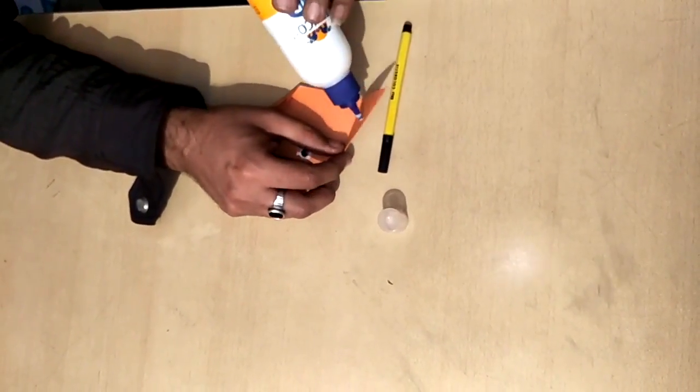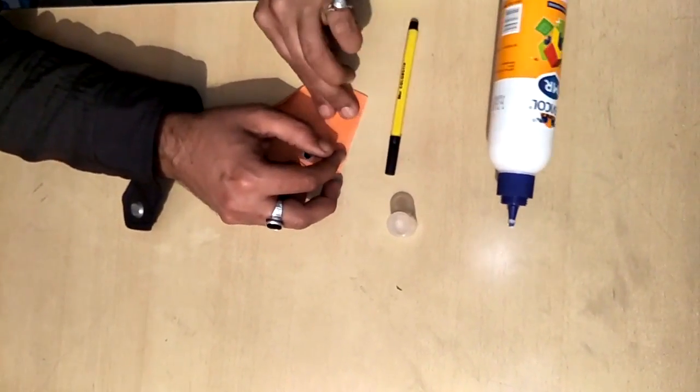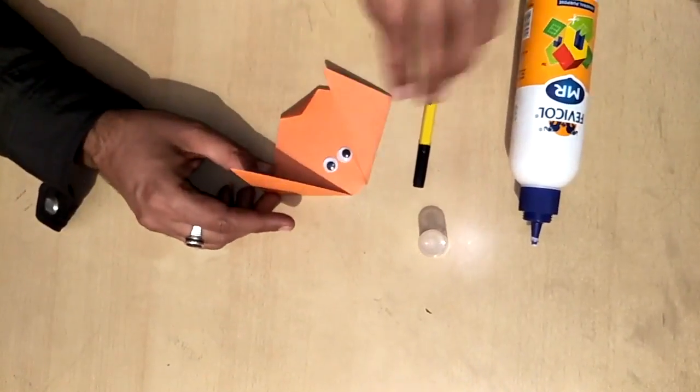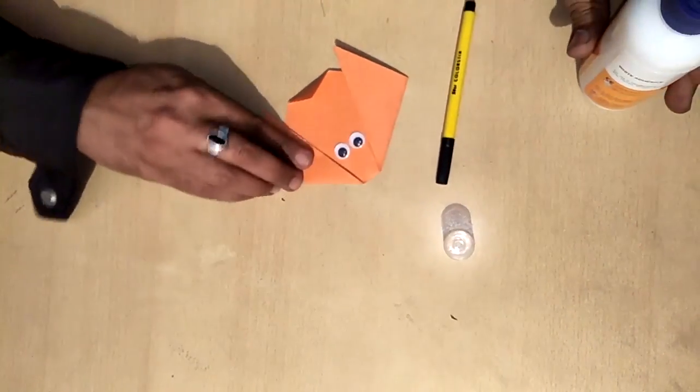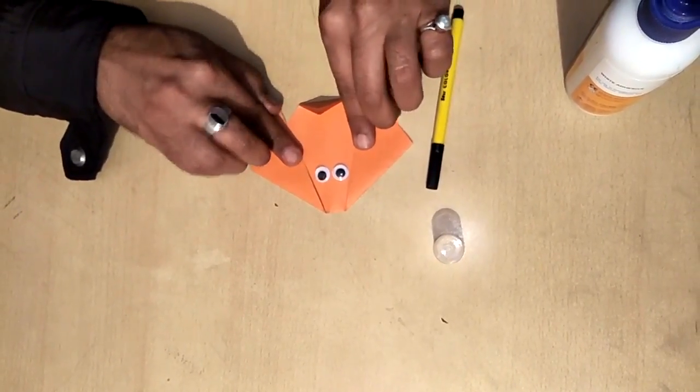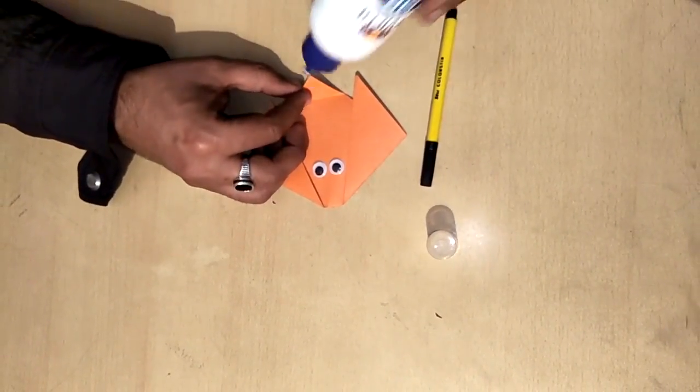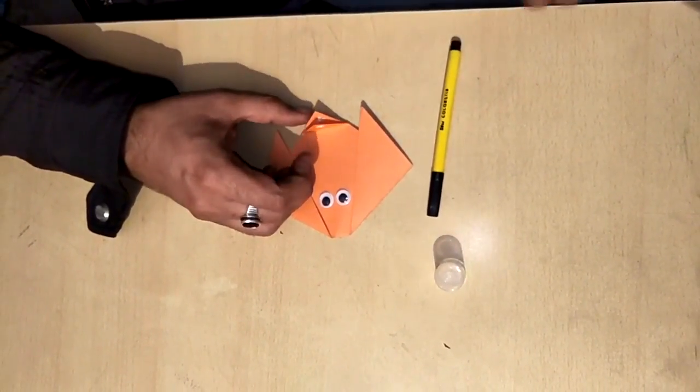Now we can add some glue inside also to paste this. And here also we can put glue. And again here. Inside, and some here also.